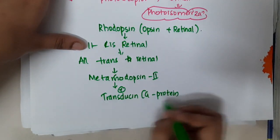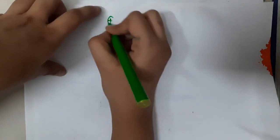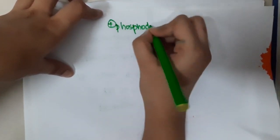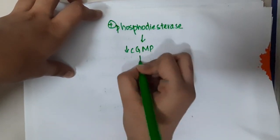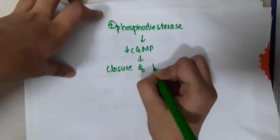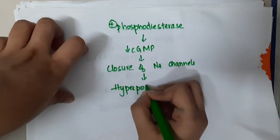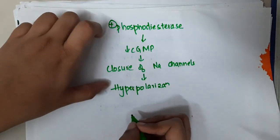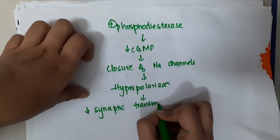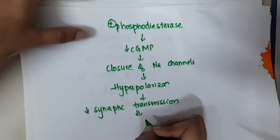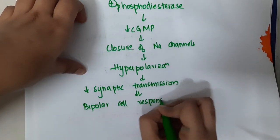Once transducin is activated, it causes activation of phosphodiesterase, which decreases cyclic GMP and thus causes closure of sodium channels. This results in hyperpolarization due to closure of sodium channels, decreasing synaptic transmission and resulting in bipolar cell response and other neural responses.